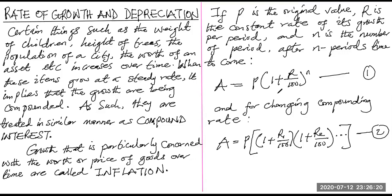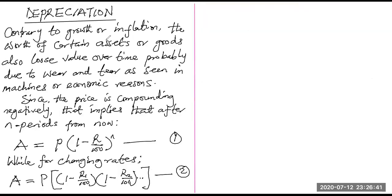We can adapt the compound interest formula to solve inflation problems, population problems, and anything to do with growth. As we have seen in compound interest in episode three, when the rate is constant we use one formula, and when the rate of compounding is changing per given period, we use another.